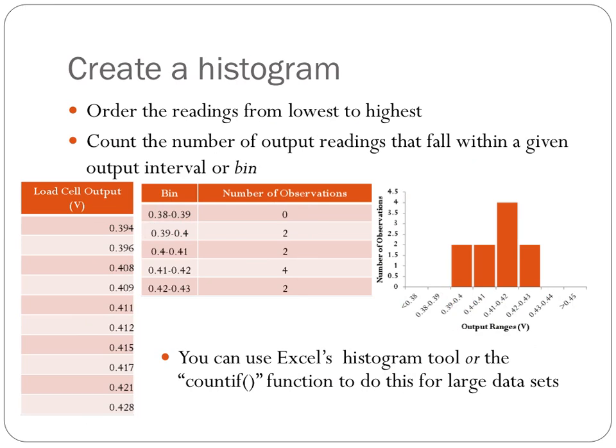We can see from this histogram that the majority of measurements — at least four of the measurements — fall near the mean value that we calculated earlier for the output voltage from the load cell when we apply 10 pounds of force.